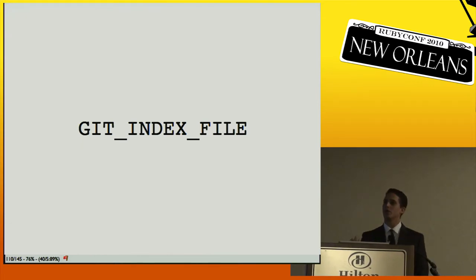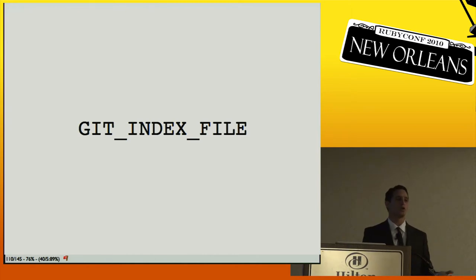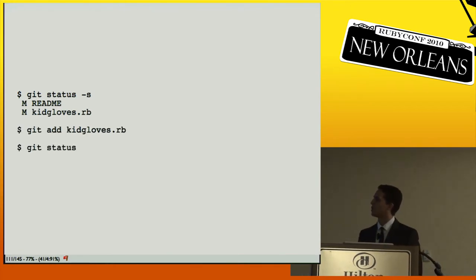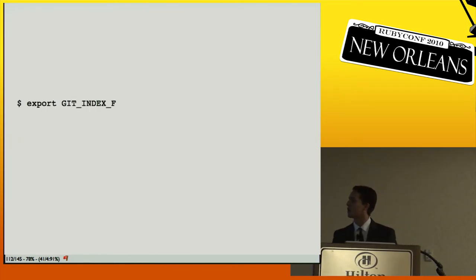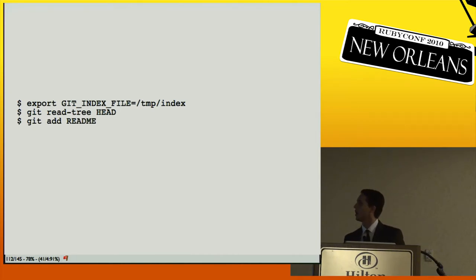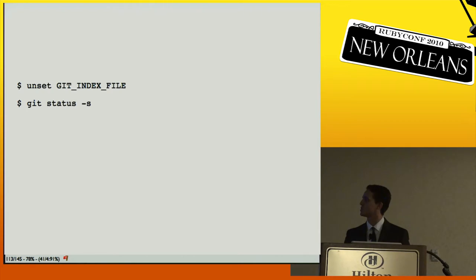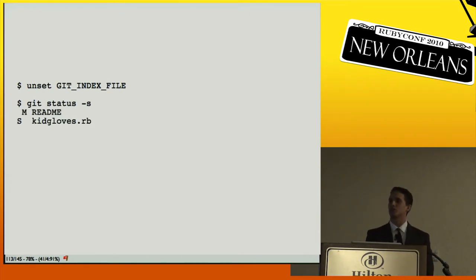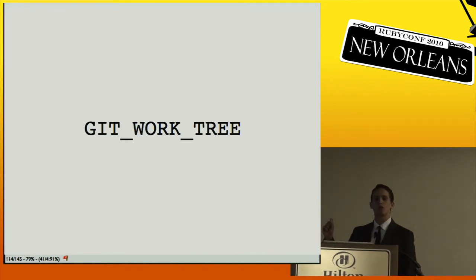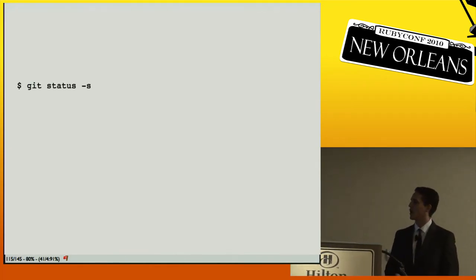The index file is your staging area. You can have multiple staging areas. If you export `GIT_INDEX_FILE`, stage different files into different indices, then unset it to switch back — you can actually switch between different staging areas. It's not useful for typing interactively but it is useful for writing scripts. Similarly, with `GIT_WORK_TREE` you can export your git directory and work tree separately, then run git commands from anywhere in the filesystem.